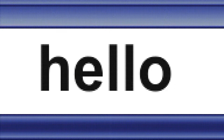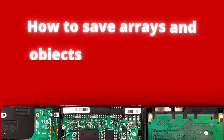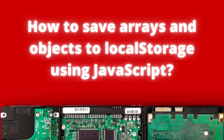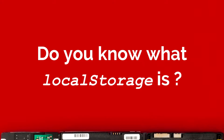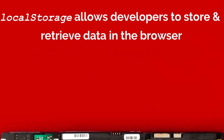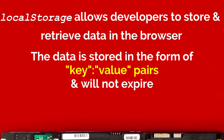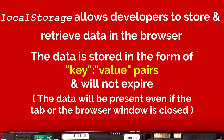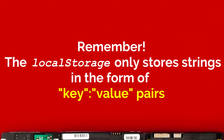Hello everyone, welcome to yet another interesting video where I'll be discussing a few pointers on how to save arrays and objects to local storage using JavaScript. But before that, do you know what local storage is? Local storage allows developers to store and retrieve data in the browser. The data is stored in the form of key-value pairs and will not expire, meaning the data will be present even if the tab or browser window is closed. Remember that local storage only stores strings in the form of key-value pairs.